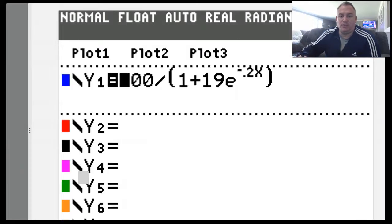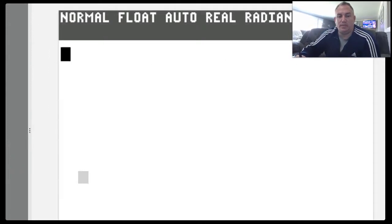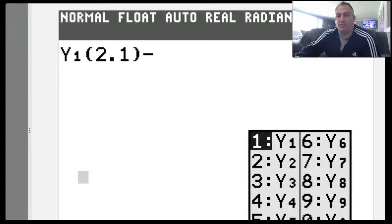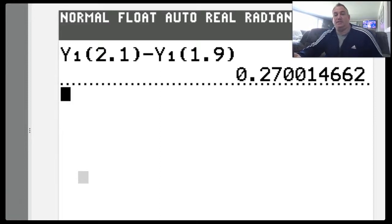So looking at my y equals, I have the equation in my y equals. Now we're going to go to the home screen, and we're going to evaluate the function y1 at our 2.1, and then we're going to subtract the function value at 1.9. This gives me a nice quick way of finding the difference of the y values, which ends up being 0.2700 approximately.